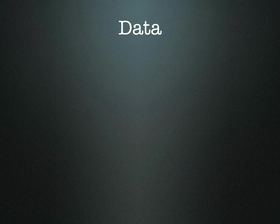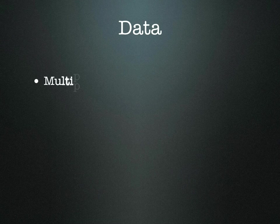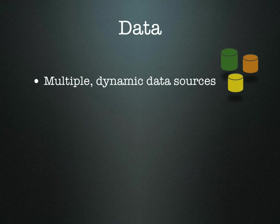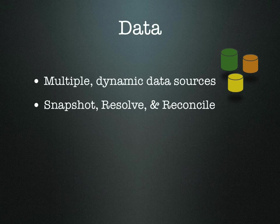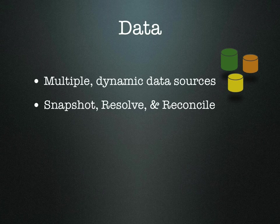Once we have this general model, how do we populate it with real data? One problem is that we are pulling data from many different data sources, including personnel, GIS, and space utilization databases, and these are all constantly changing. The process we use is to snapshot the data, resolve any consistency issues, and as needed, reconcile any resulting plan with a current snapshot.